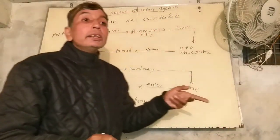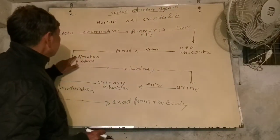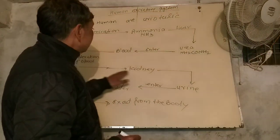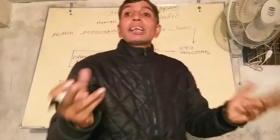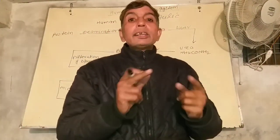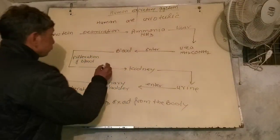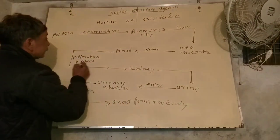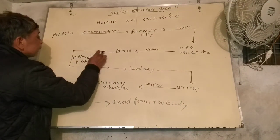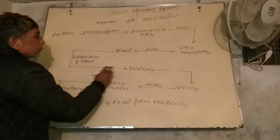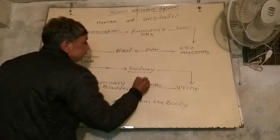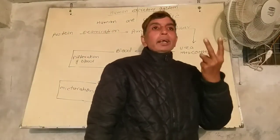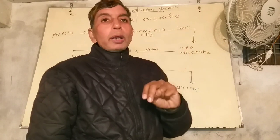This blood enters into the kidney. The kidney is the excretory organ in human beings. Blood enters the kidney by the renal artery. The renal artery is the artery by which urea-containing blood enters into the kidney. One pair of kidneys is present in the human body.